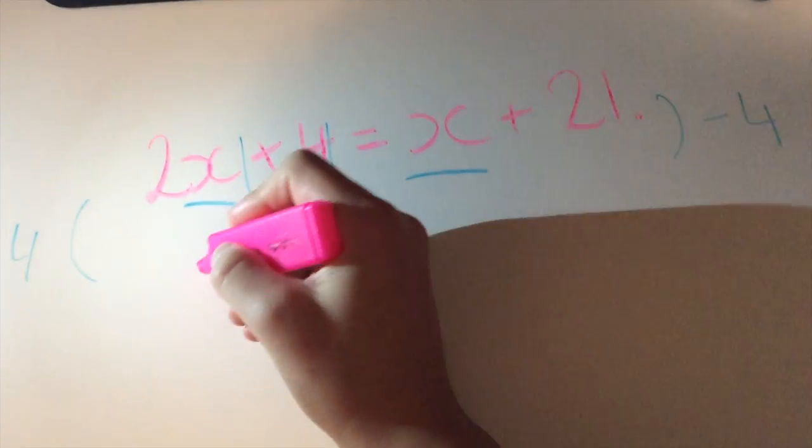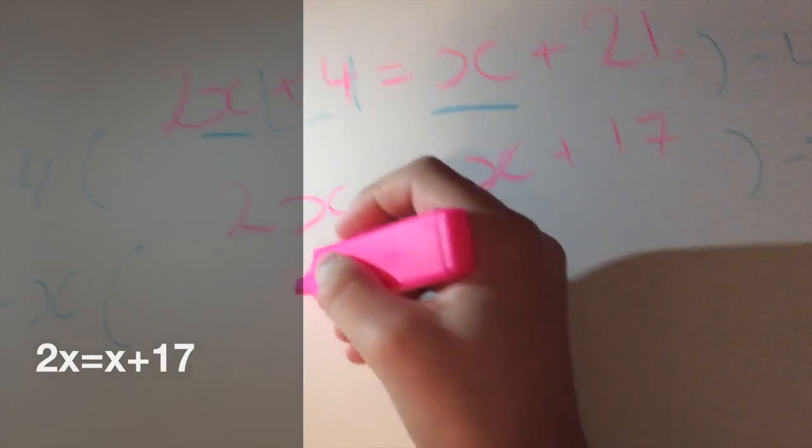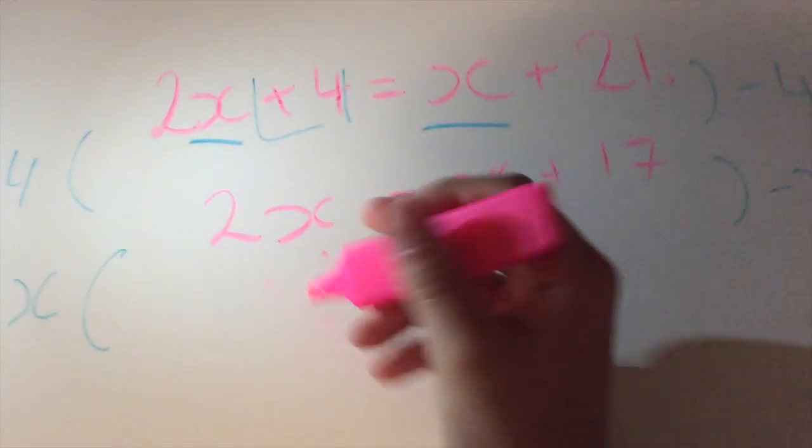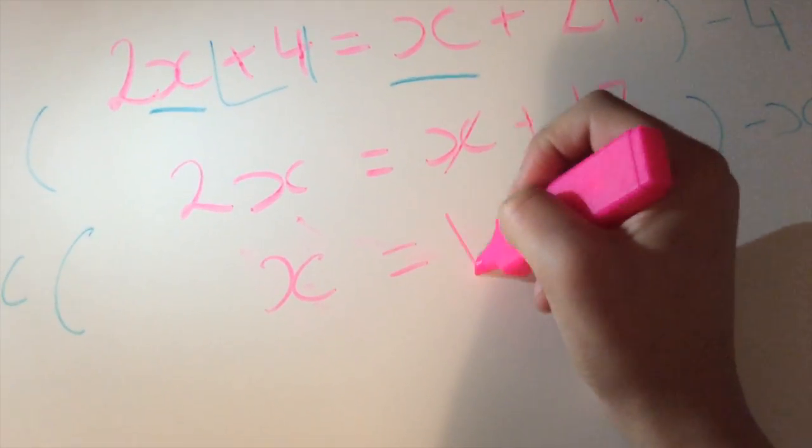This will leave us with 2x is equal to x plus 17. That would leave us with x is equal to 17.